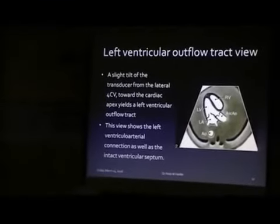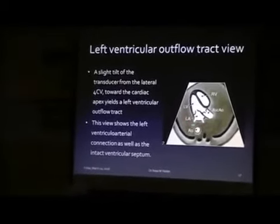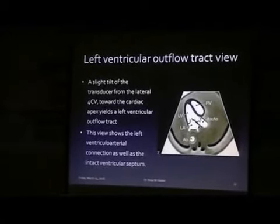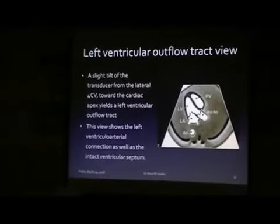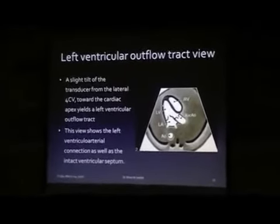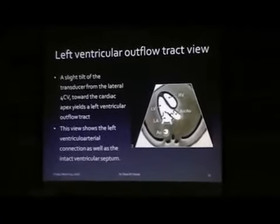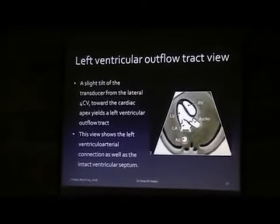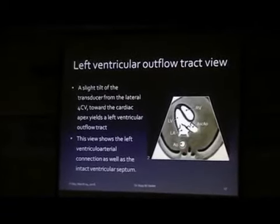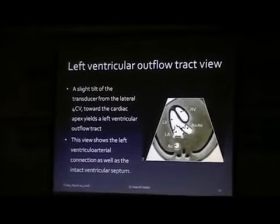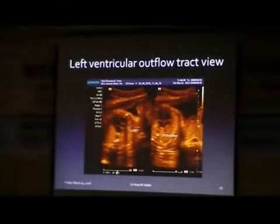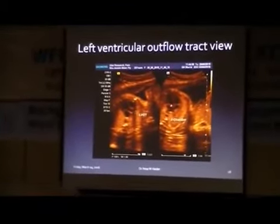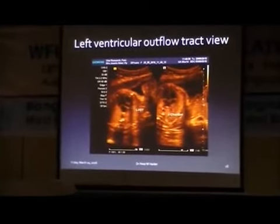This is the left ventricular outflow tract view. In this view we will get all the structures as shown in the four-chamber view, except the right atrium, and here we will get the origin of the ascending aorta from the left ventricle. All structures like the descending aorta, left ventricle, left atrium, and right ventricle are visible. This is the ultrasound scan — this is the left ventricular outflow tract view, this is the four-chamber view, this is the interventricular septum, and this is the descending aorta.